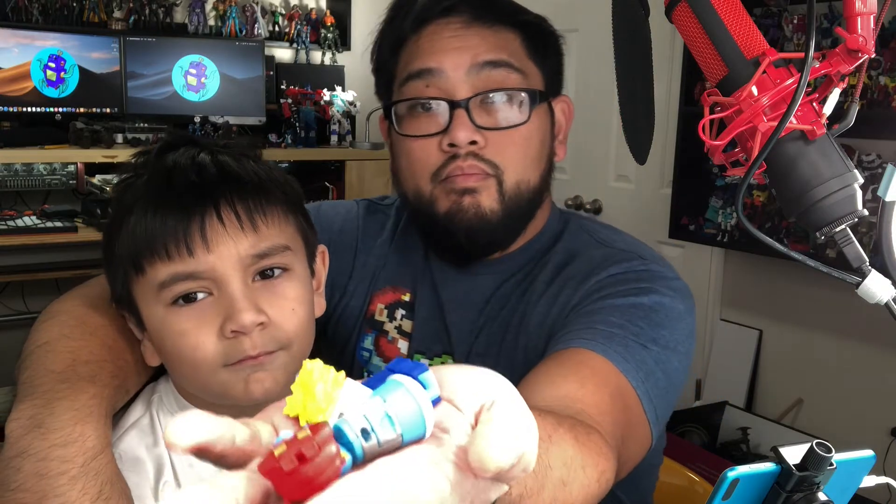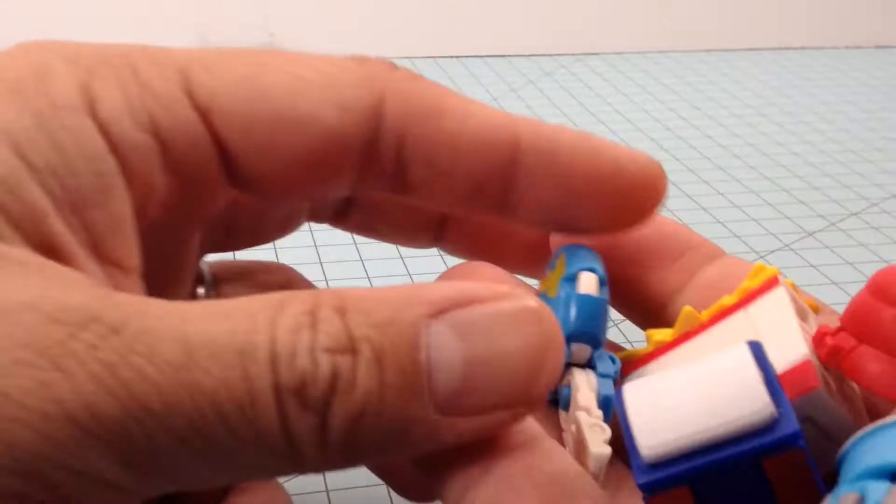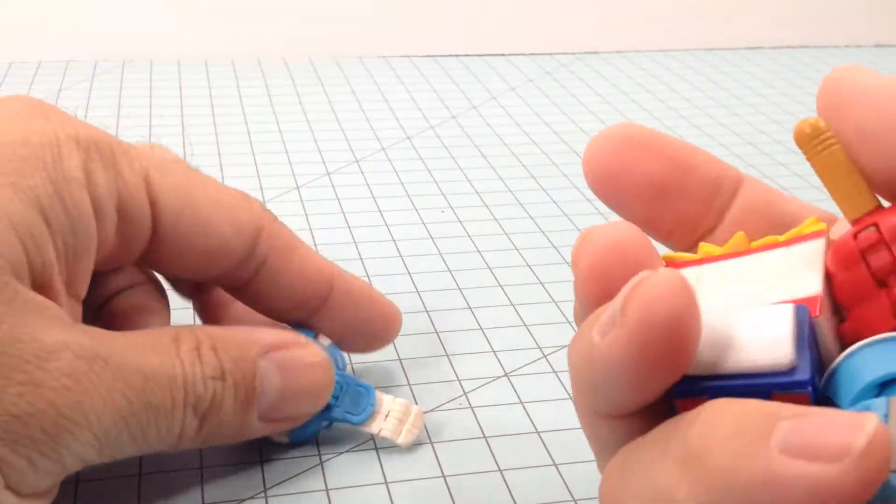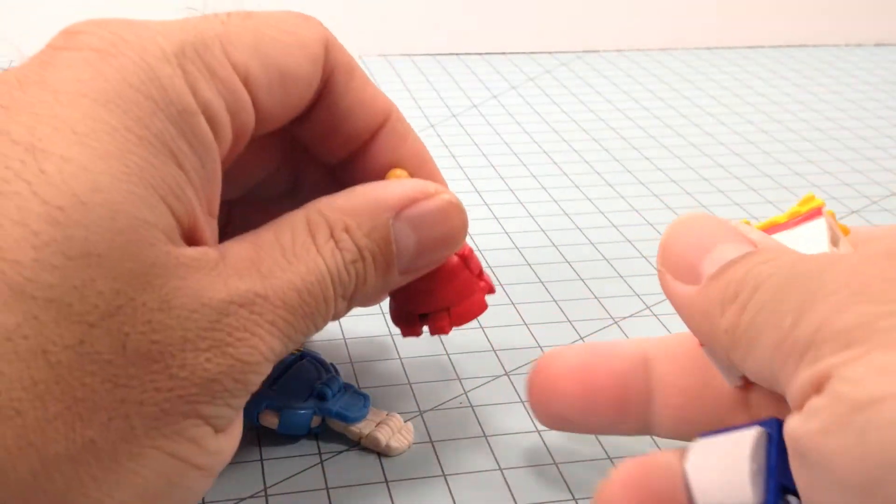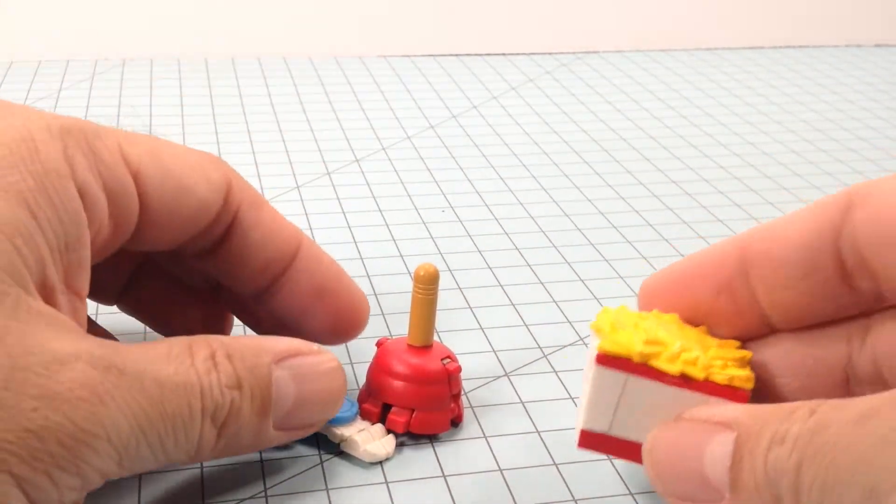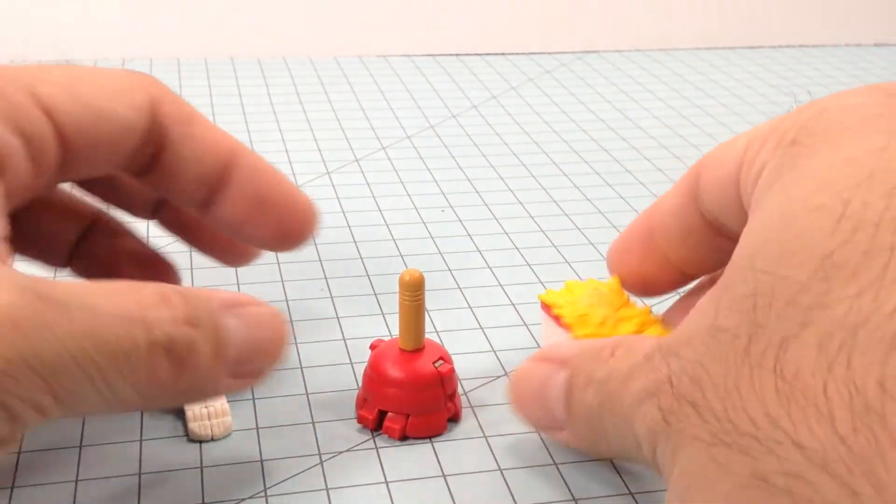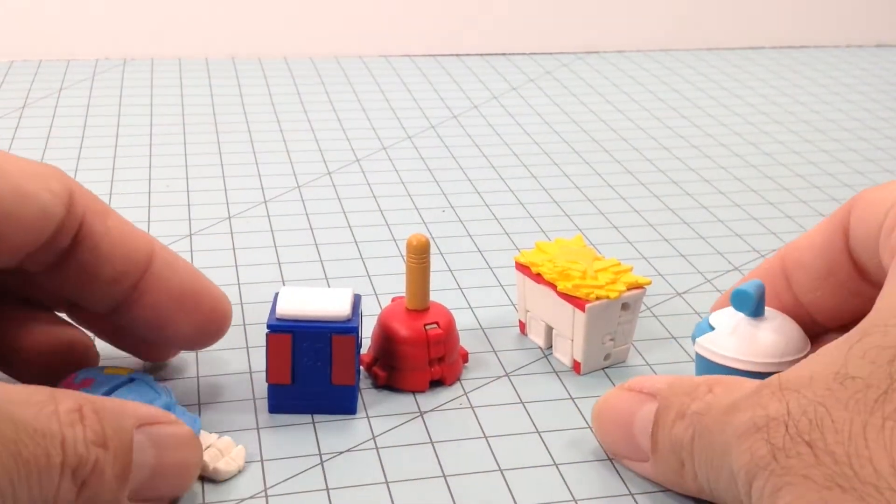So we have, what are these? Bot Bots! We got some Bot Bots. This is the Sugar Shocks team. They're cool little toys, right? Yeah. If you're not familiar with Bot Bots, they're little Transformers that transform into everyday items around the house.